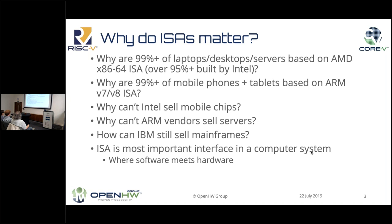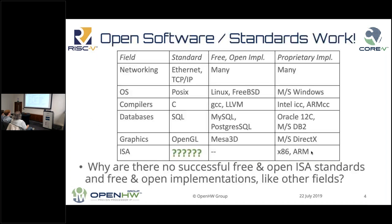The simple fact of the matter is the ISA is the most important interface in a computer system — it's where software meets hardware. If that's true, then why do we not have any open standards for an ISA? Pretty much every other interface in a computing system has plenty of successful open standards to govern that piece of technology. Why not in the ISA space? I'll just leave that question hanging.